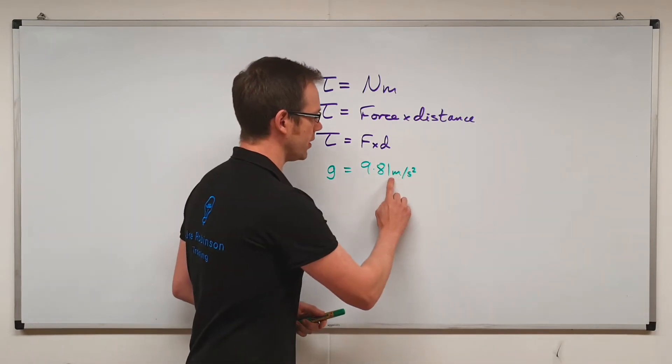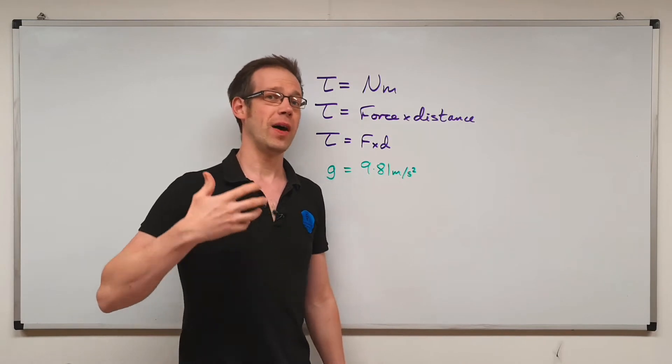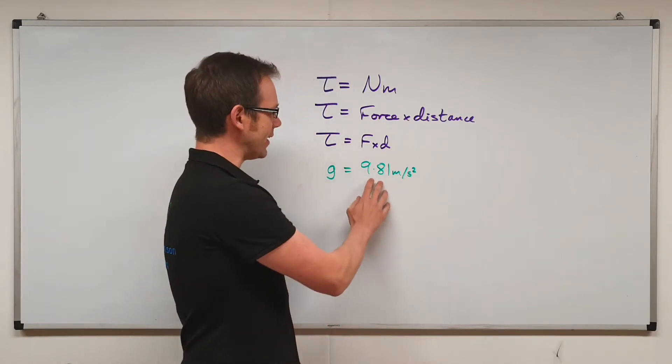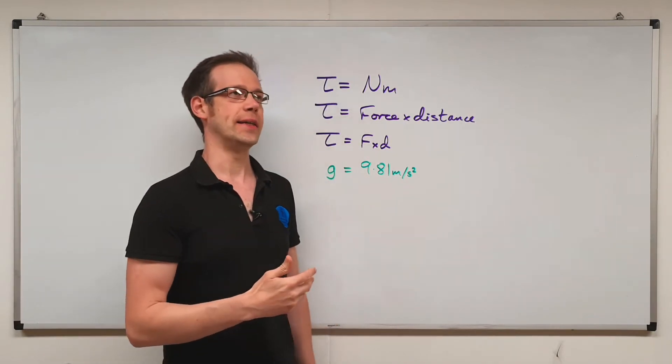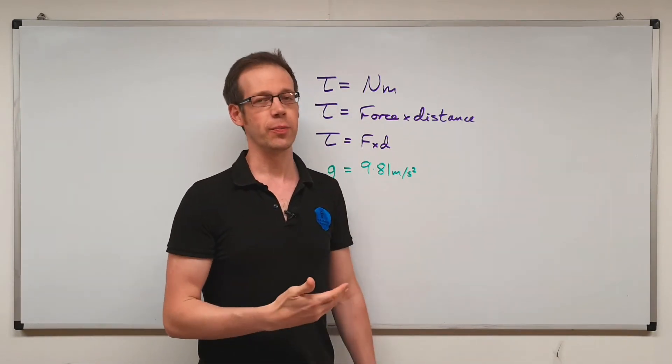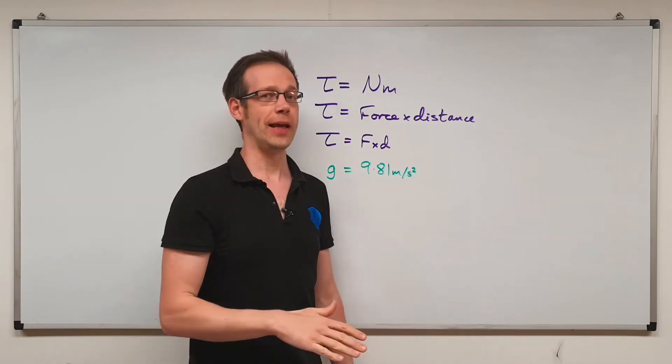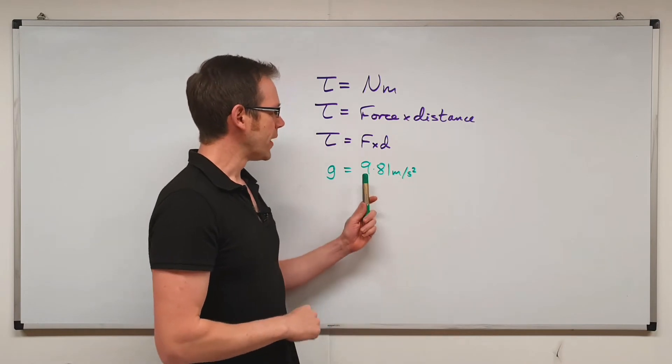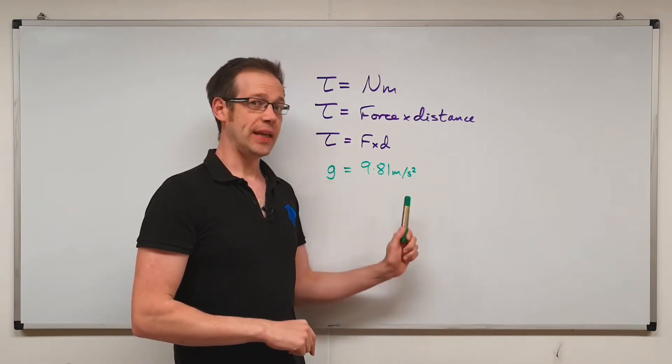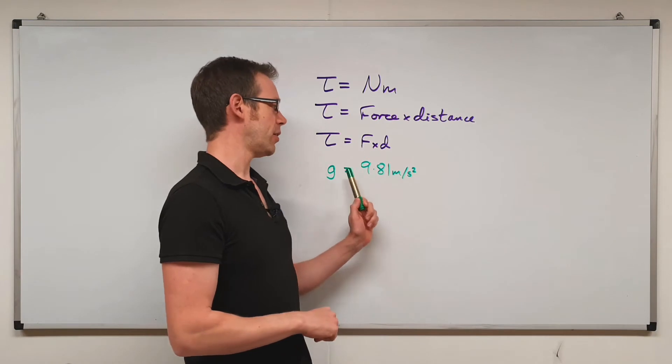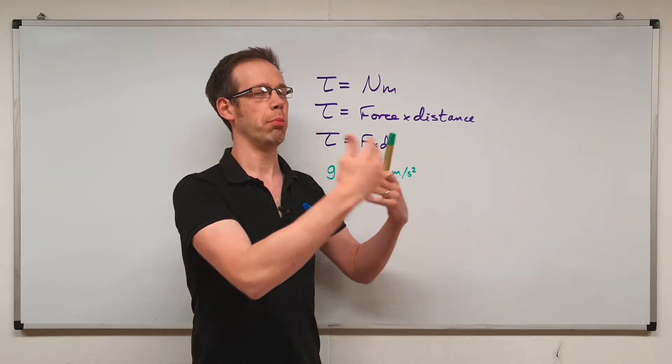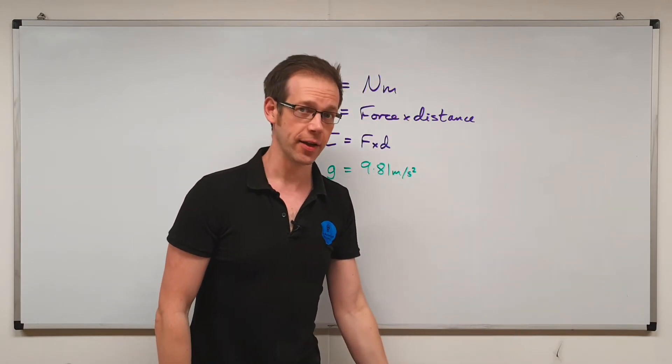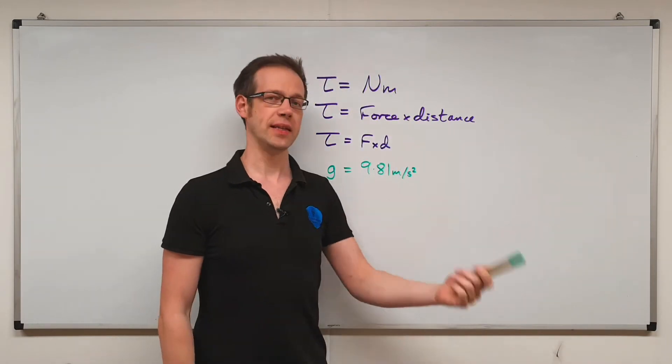Now, if you know anything about physics, you'll know that this unit here is actually the unit for acceleration. So how does that relate? Well, basically, this number here is the value of acceleration that would be applied to you if you were to fall out of a plane, ignoring all the things like wind resistance. You would fall and your speed would increase at a rate of 9.81 meters per second per second.